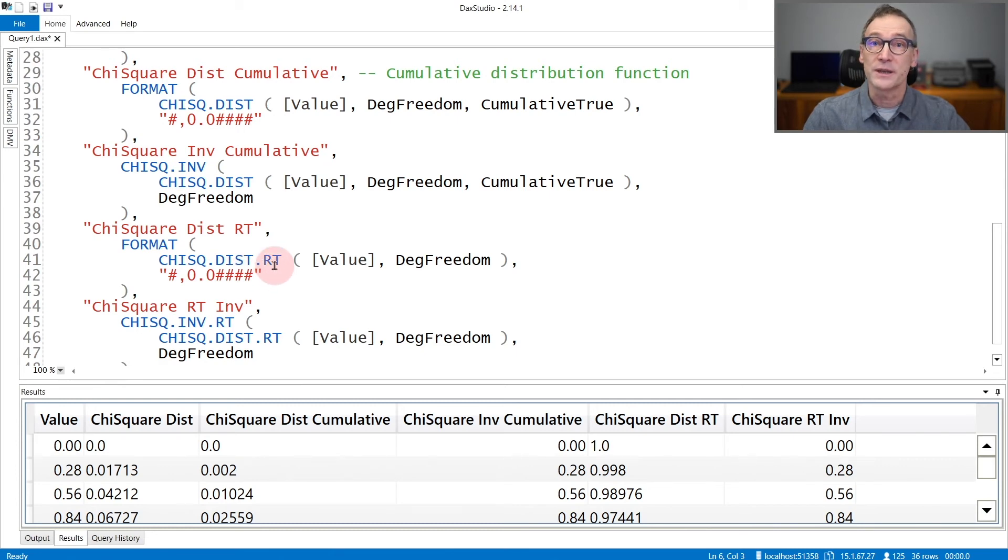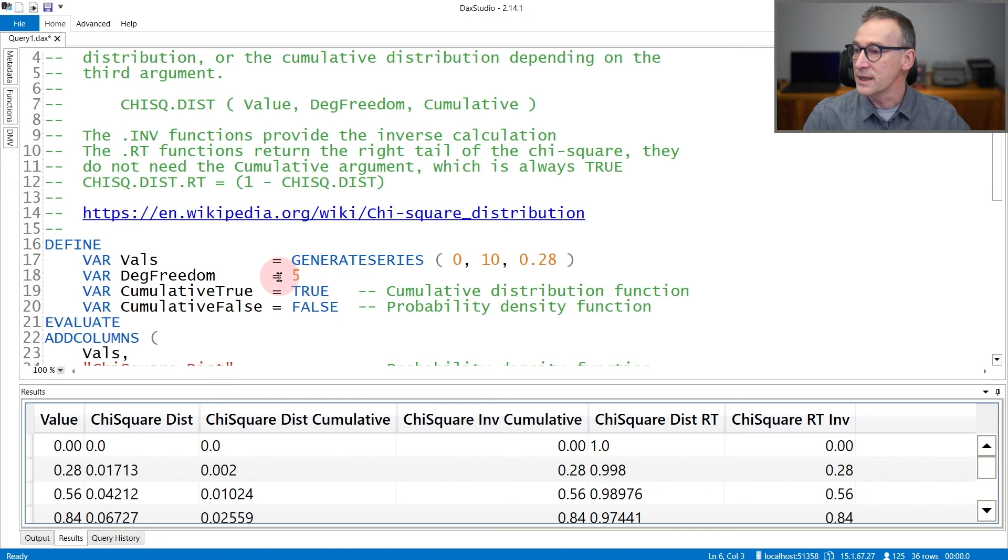You also have the right tail version of the chi-square, which is linked to the chi-square by this formula. The chi-square distribution right tail is 1 minus the chi-square distribution.